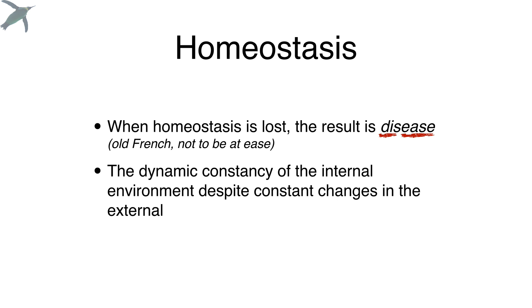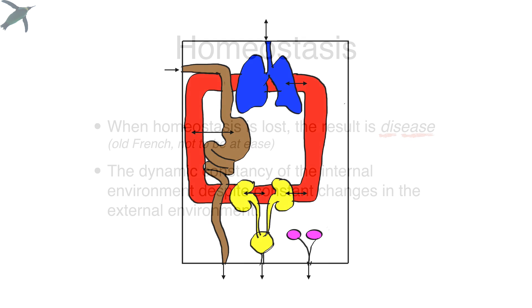In most textbooks you'll see a definition of homeostasis something like this: the dynamic constancy of the internal environment despite constant changes in the external environment. We're going to explore both aspects of this, starting with the internal and external environment idea.